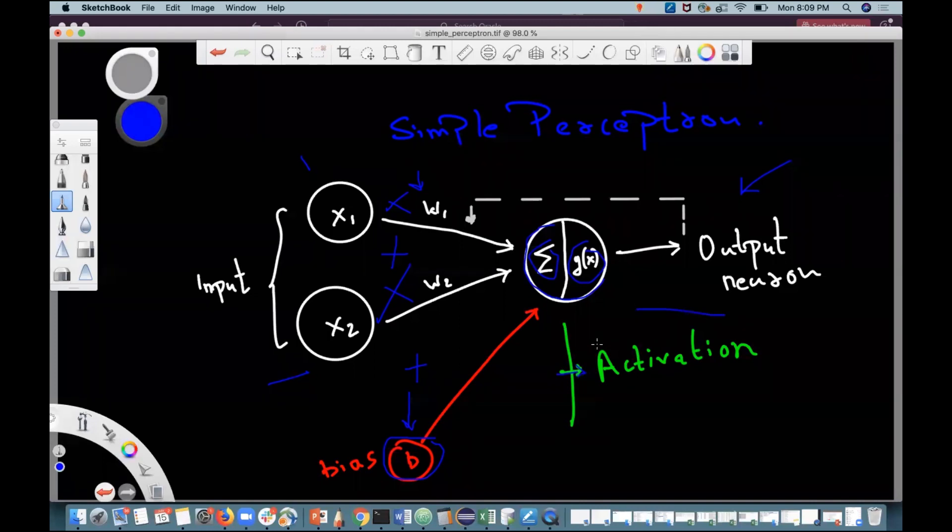Some non-linearity is added. Non-linearity means that if earlier a straight line was being learned, now it won't be a straight line but it will be a curve.